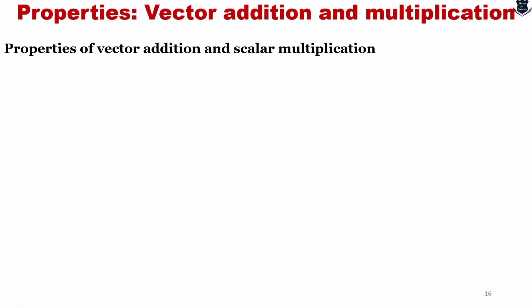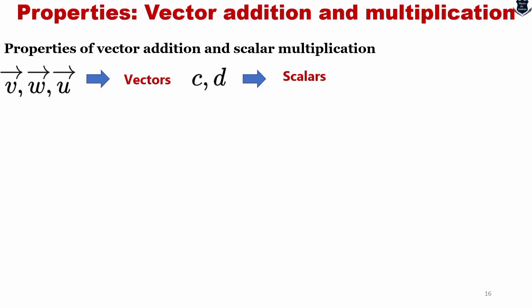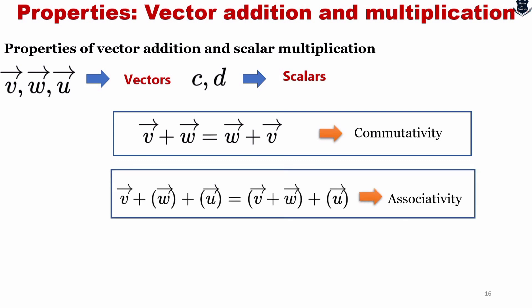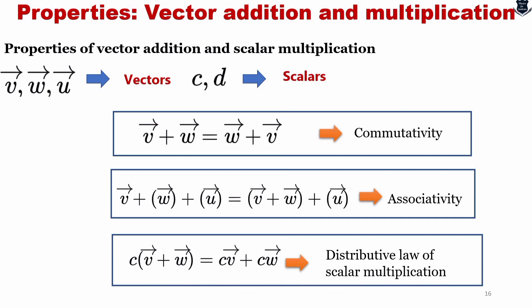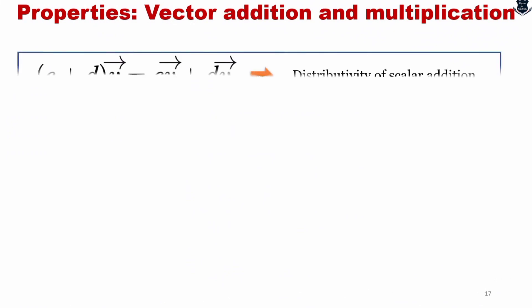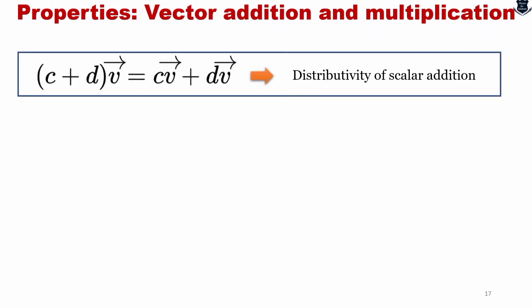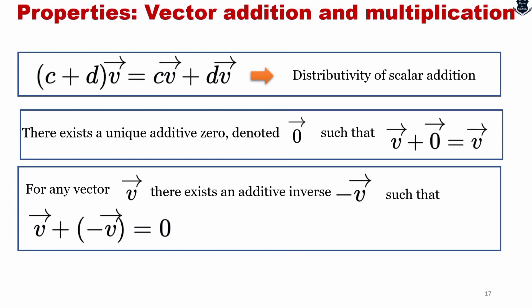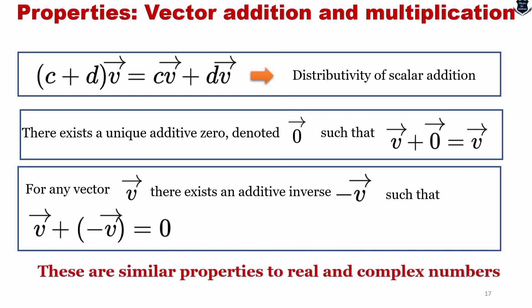The properties of vector addition: for vectors u, v, w and scalars c, d — first, commutativity: v + w = w + v; second, associativity; third, distributive law of scalar multiplication; fourth, distributivity of scalar addition; fifth, there exists a unique additive zero such that v + 0 = v; and sixth, for any vector v there exists an additive inverse such that v + (-v) = 0. These are similar properties to real and complex numbers.